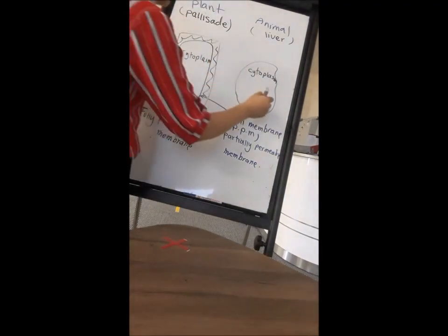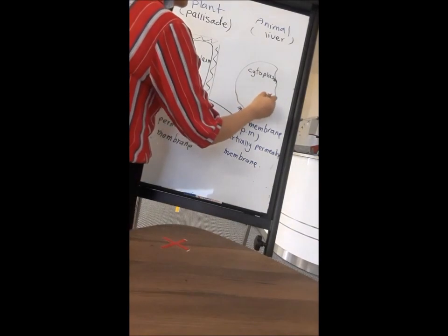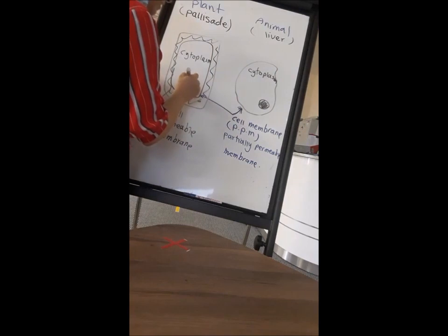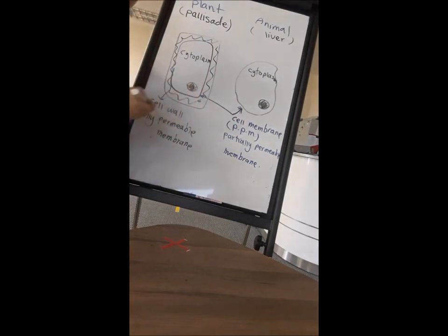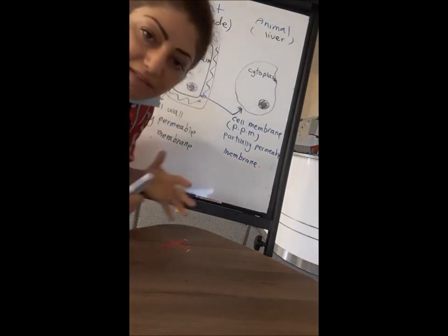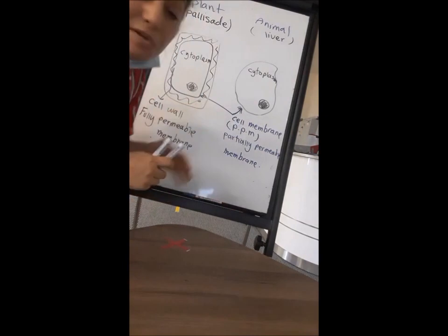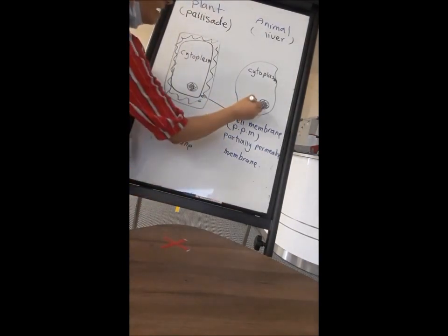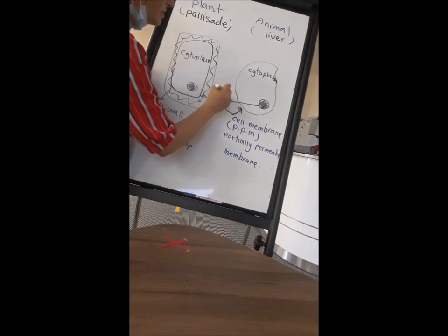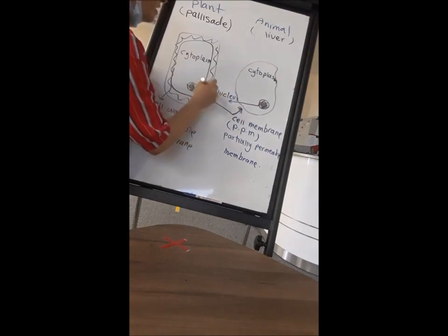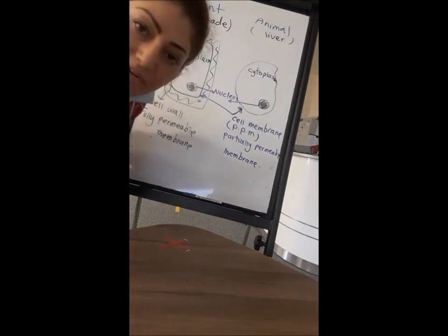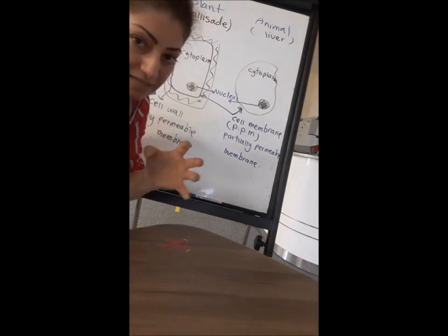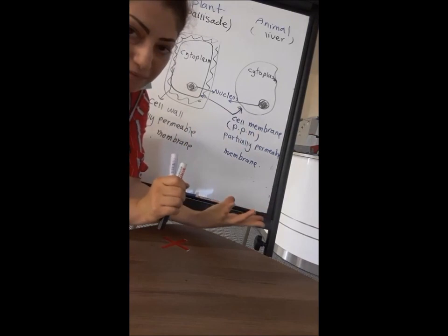Another thing common to both is their 'brain' — the nucleus. Just like we need a center to think and decide what the whole system should do, the nucleus is the control center of the cell. It monitors everything and decides what should happen next.